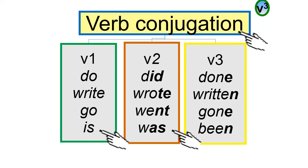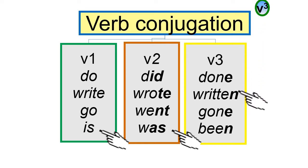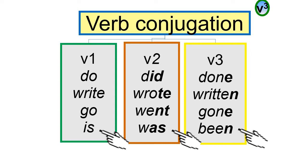V3 verbs are shown in italic with only the last letter bold — for example: Done, Written, Gone, Been.